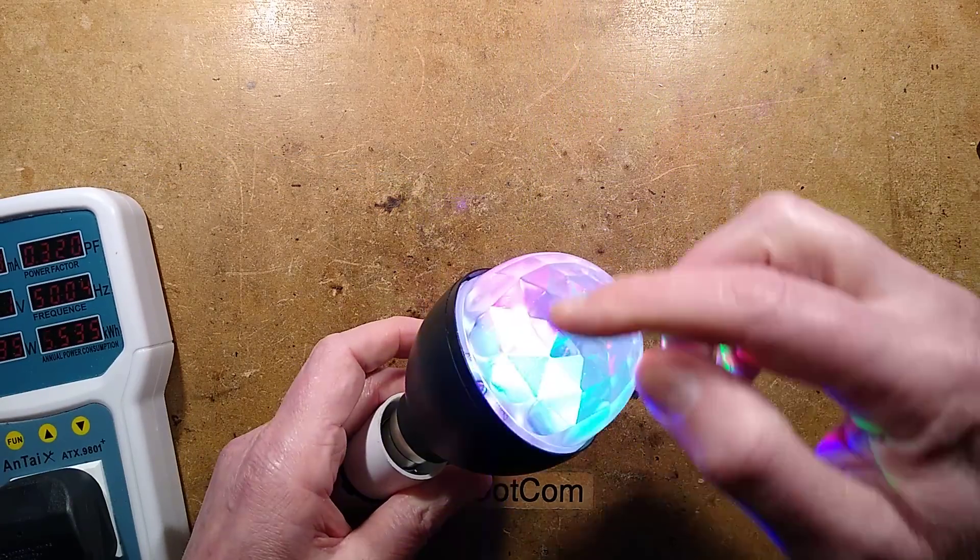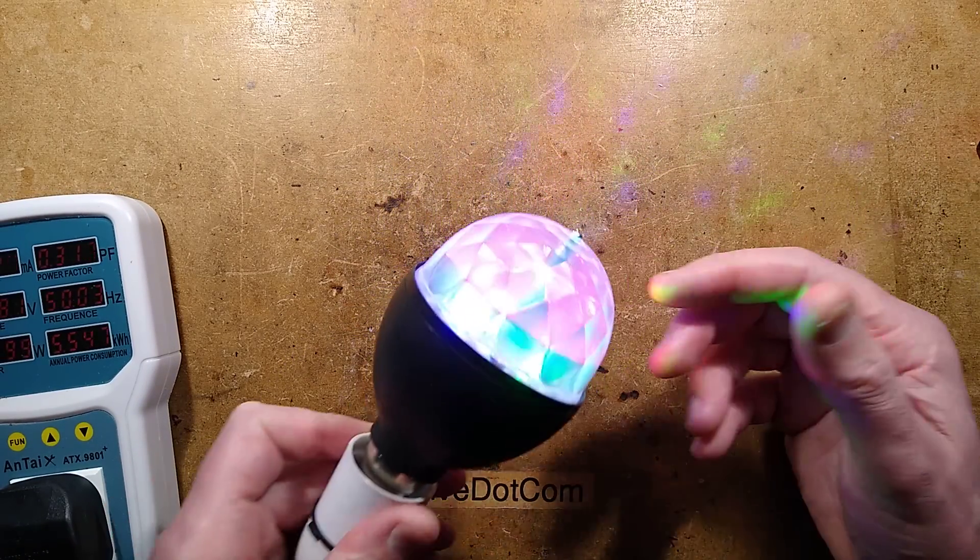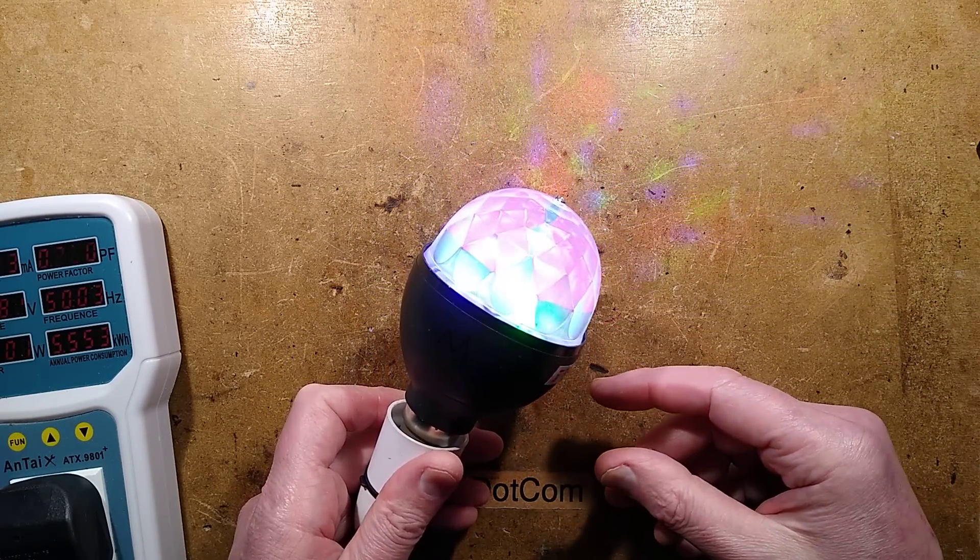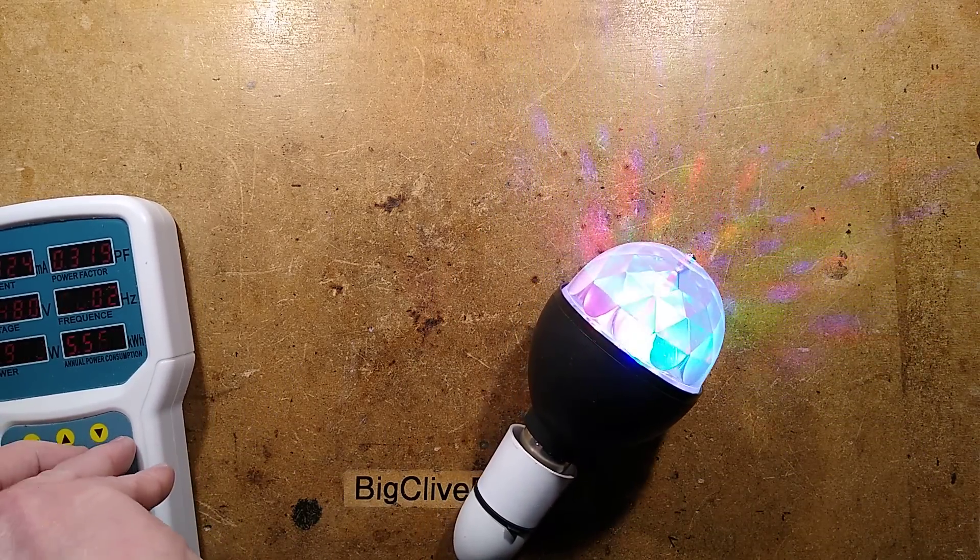The idea is you've got three LEDs behind here, red, green and blue, and they shine through this rotating dome. The dome in this one is very diffused. It seems like they've maybe cheaped out a bit too much in the dome.